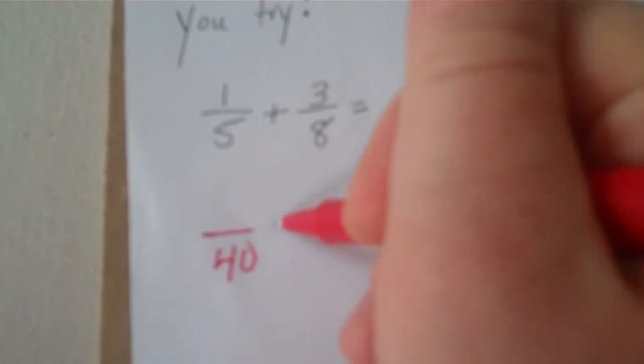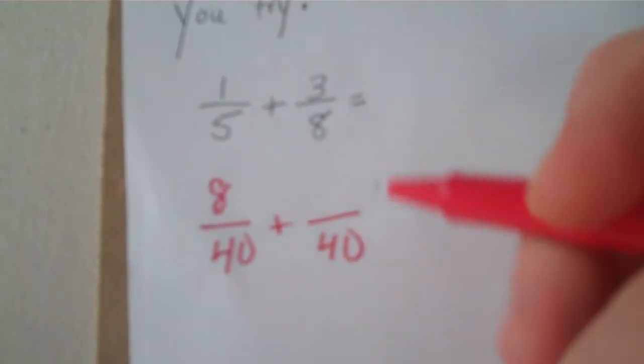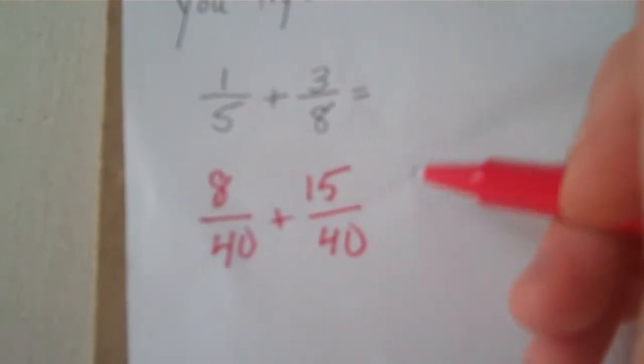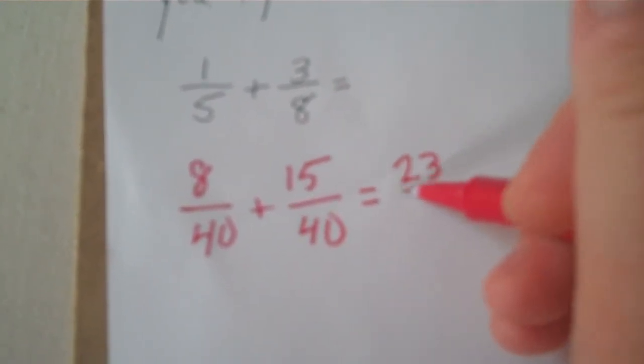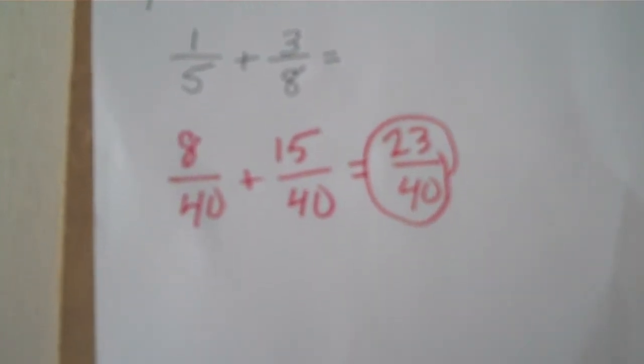Here's the solution. A common denominator for these two numbers is forty. One fifth is eight fortieths, and three eighths is fifteen fortieths. Eight plus fifteen is twenty-three. So my answer here is twenty-three fortieths.